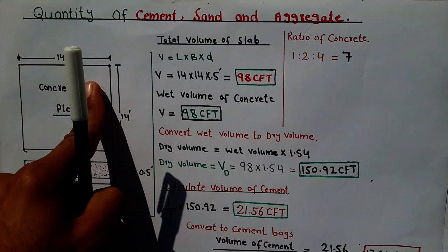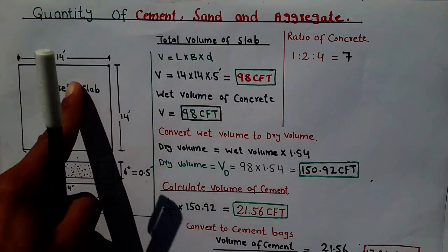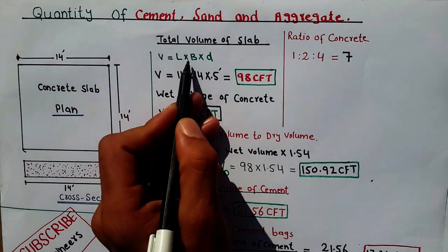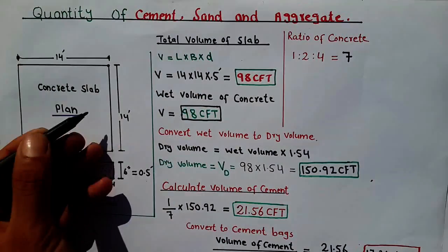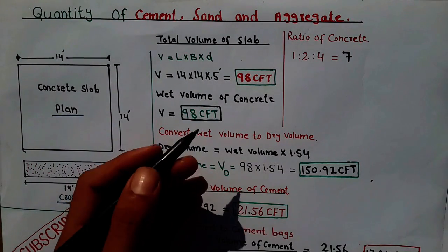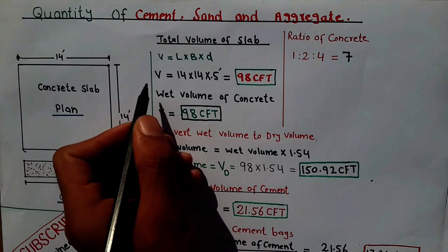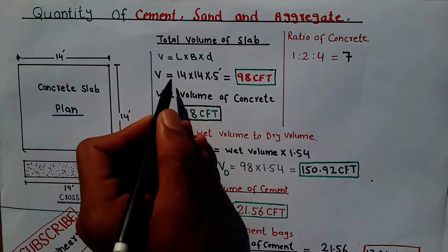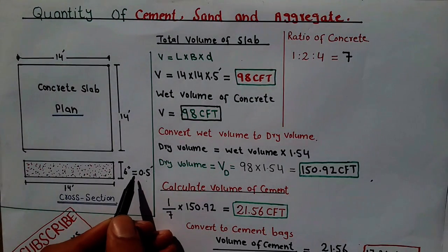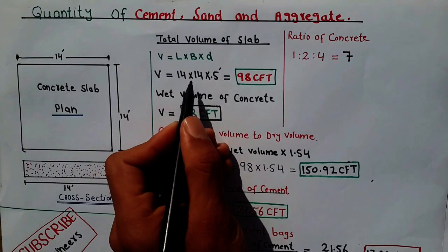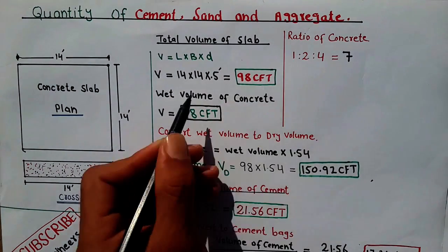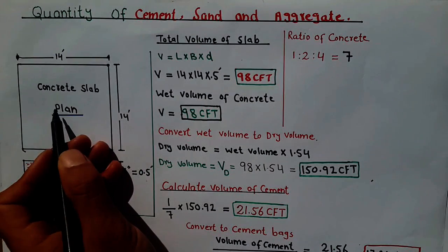For this slab I want to find out the quantity of cement, sand, and aggregate. For that I need to find the volume of this slab. Total volume of slab is V = L × B × D, where L is length, B is breadth, and D is depth or thickness of the slab. So V = 14 feet × 14 feet × 0.5 feet, which gives you 98 CFT — 98 cubic feet. This volume is the wet volume for the slab.